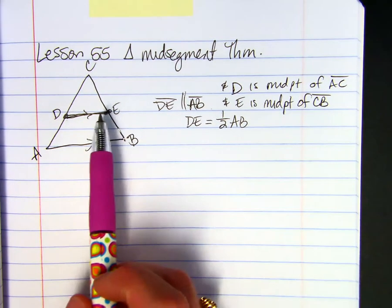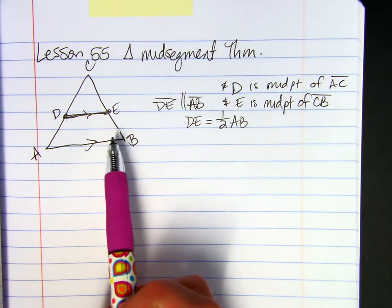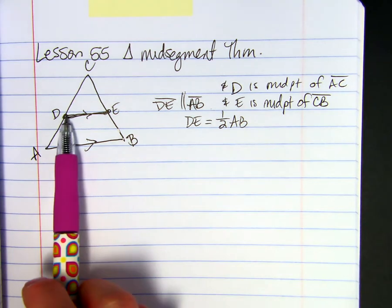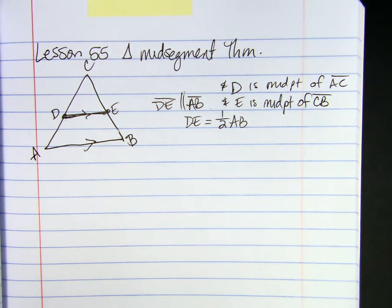So if the midpoints are being connected and it's parallel to the third side, then this segment will be half of that segment.